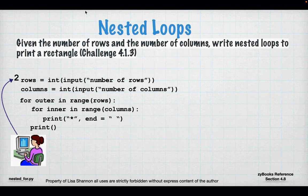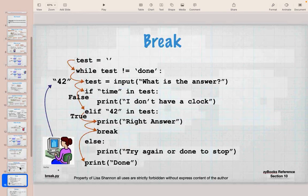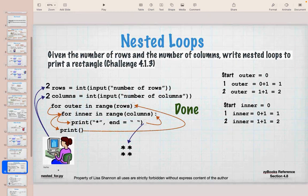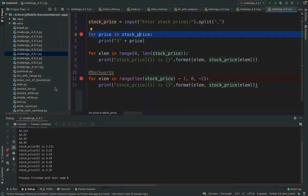In this example, I'm inputting a number of rows and a number of columns, then printing the number of rows and columns using a nested loop. This is similar to a lab where you'll have to print a right triangle. I have an outer for loop 'for outer in range(rows)' and an inner for loop 'for inner in range(columns)', printing a star with a space, and when done with each row, printing a new line. Let me walk through this in code — it will be clearer.